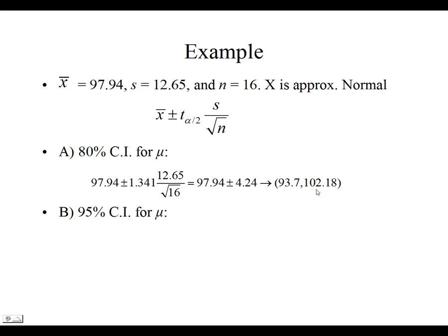The inference is the same as we did with the large sample. So, we are, in this case, 80% confident the true population mean will fall between 93.7 and 102.18.